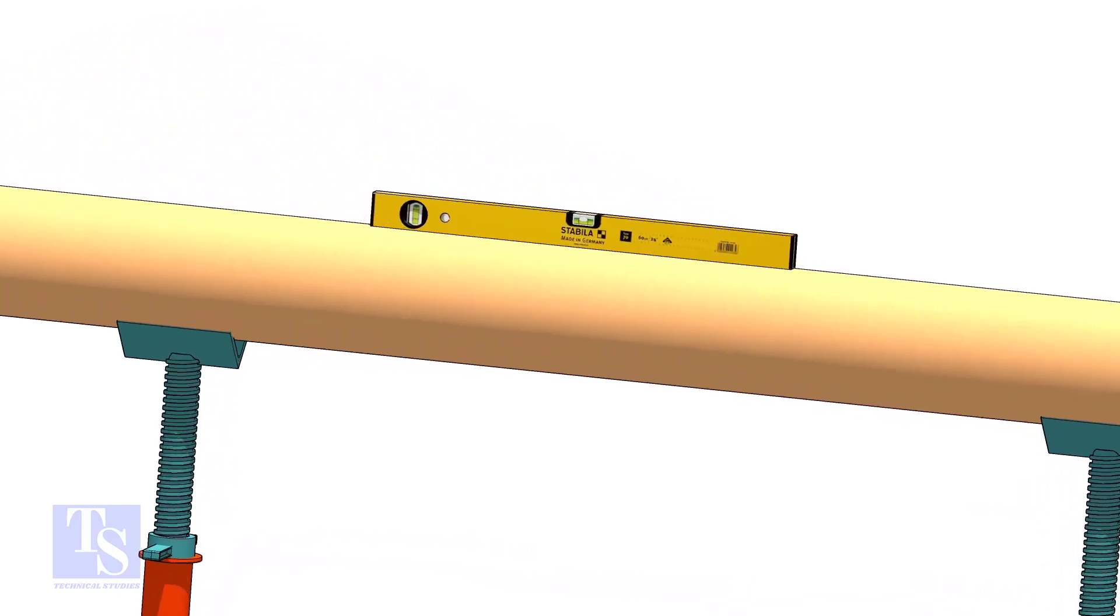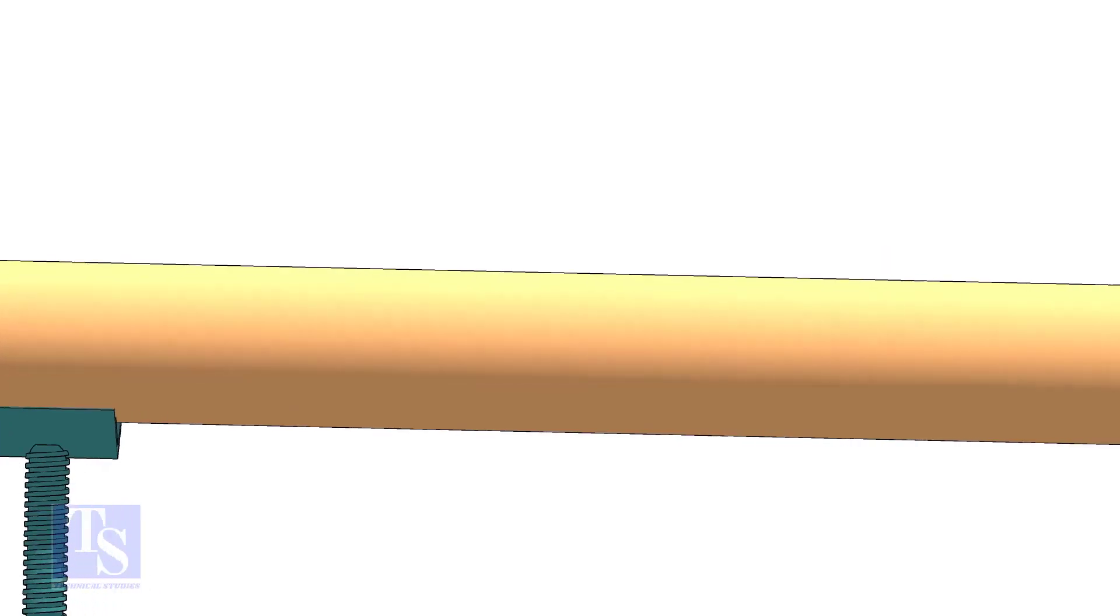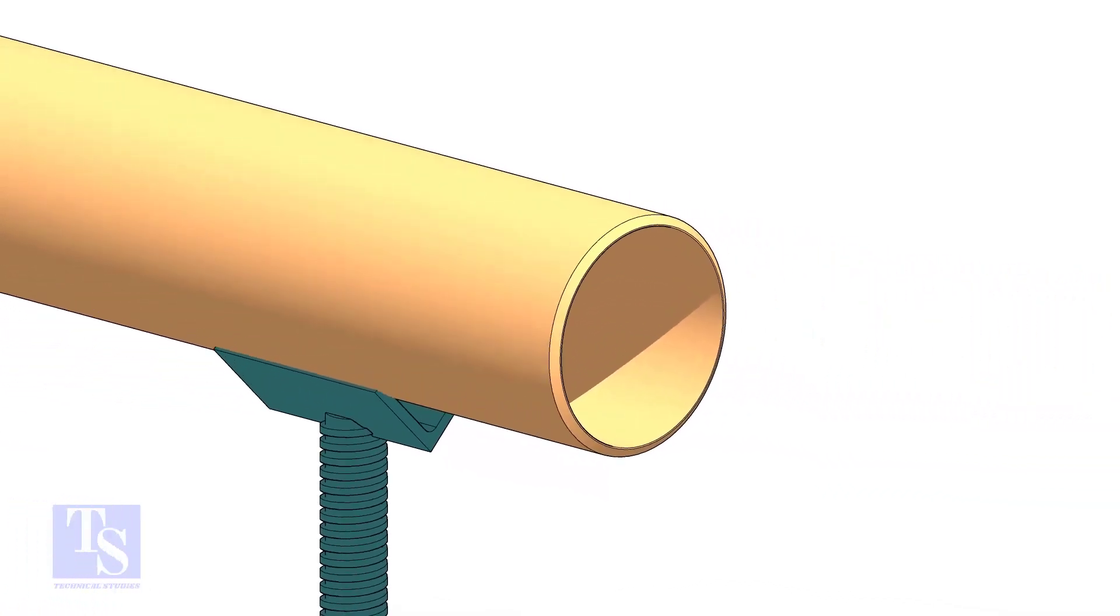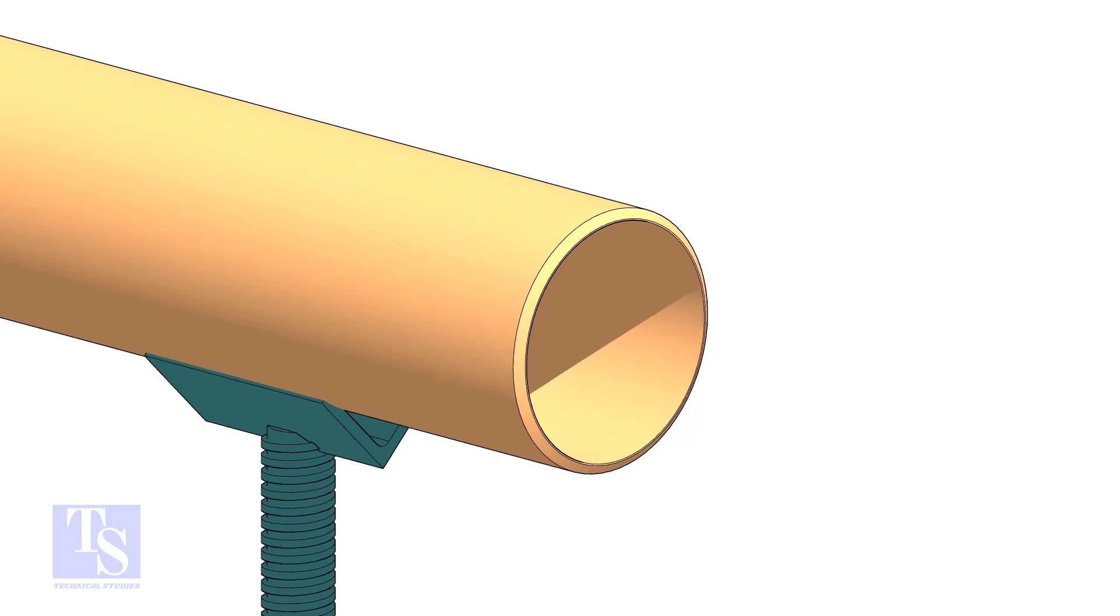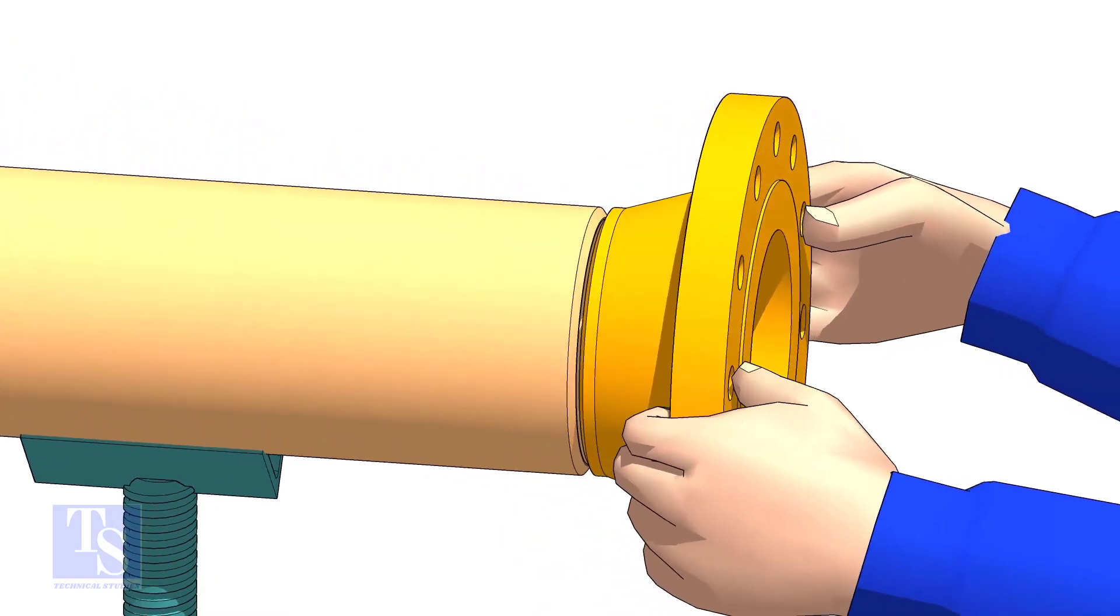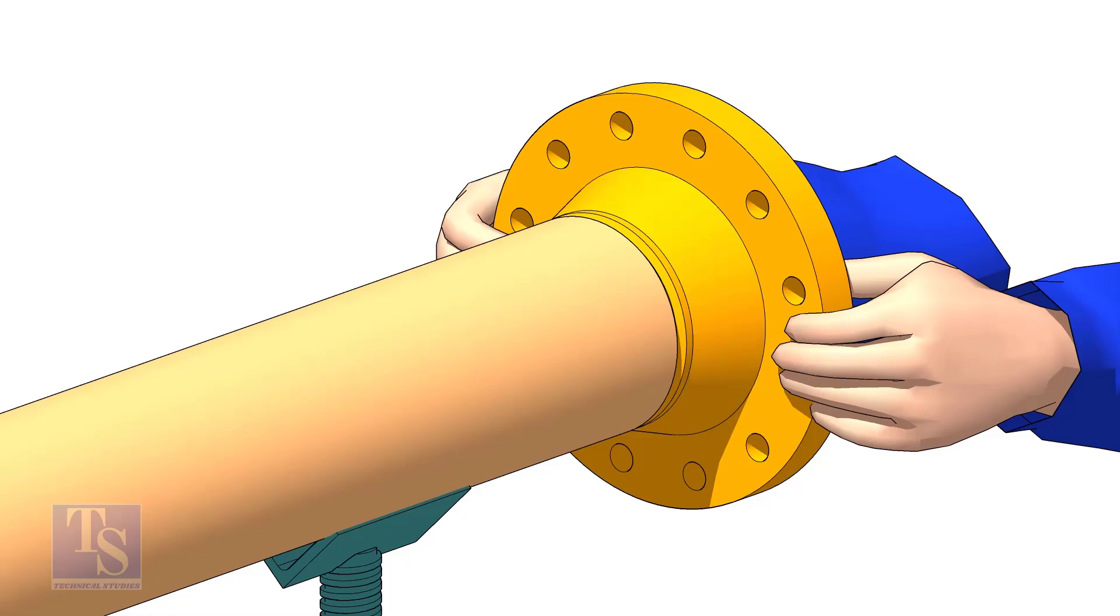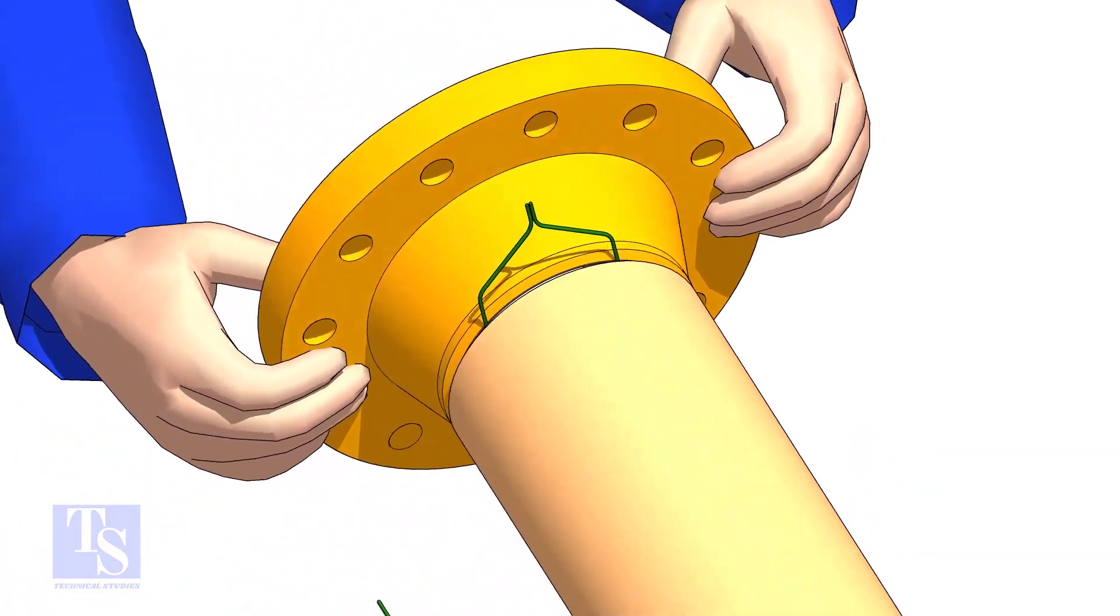Level the pipe. Hold the flange on the pipe face as shown. Put the gap rod in the joint. Look through the flange and the pipe, and adjust the overlap.